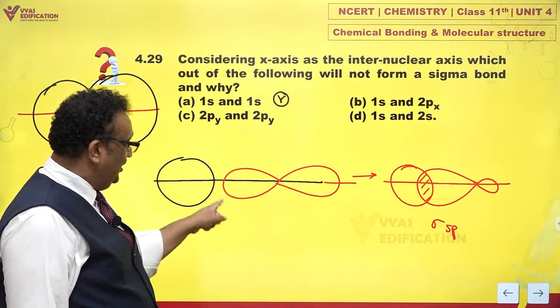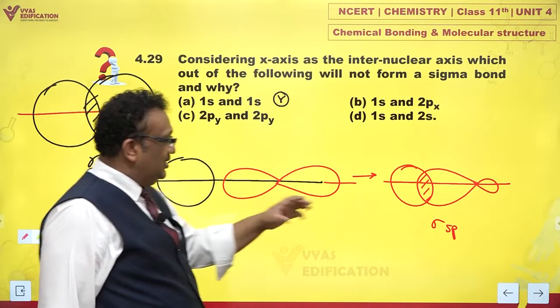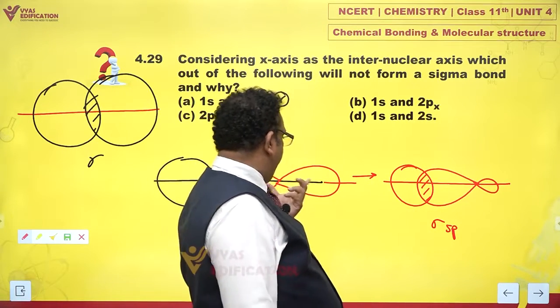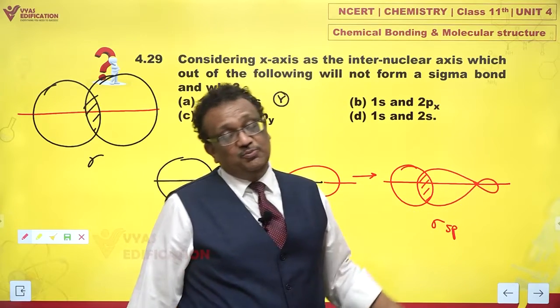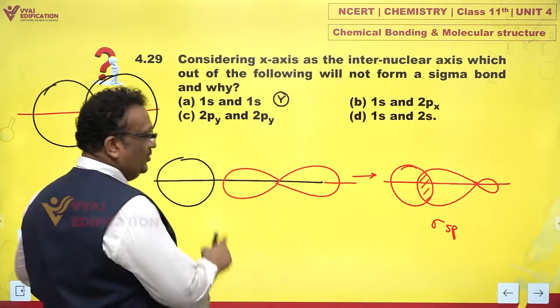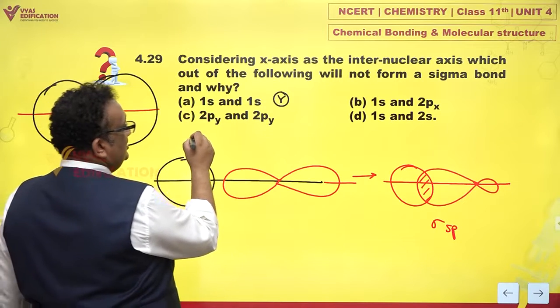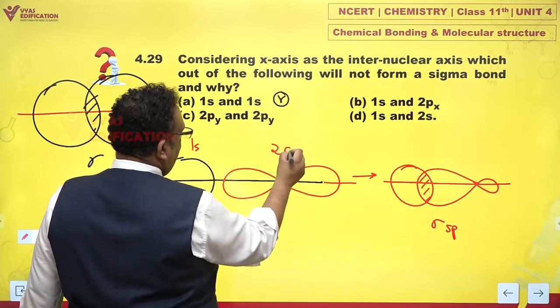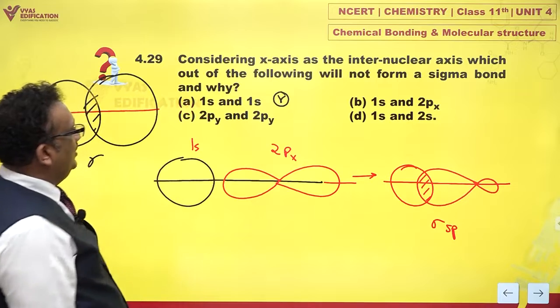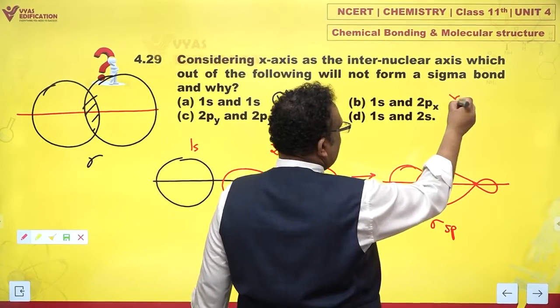Please note, the portion of orbital which overlaps becomes bigger, and the other portion shrinks and becomes smaller. But this is before the formation of bond and this is after the formation of bond. This is 1s and 2px. Now, is it forming a sigma bond? Yes, very much.